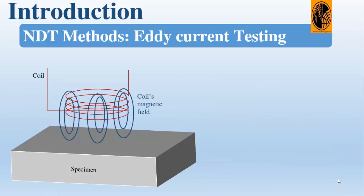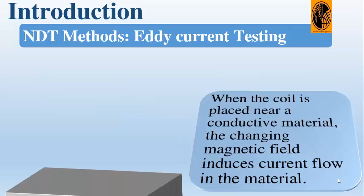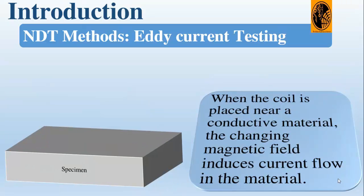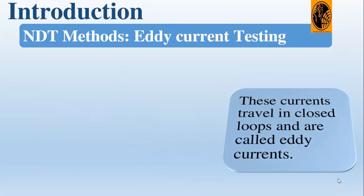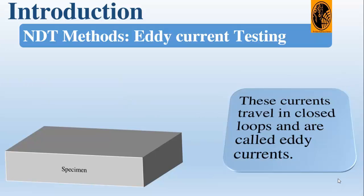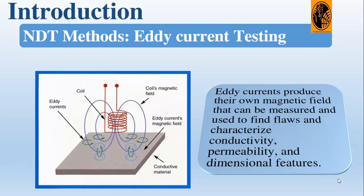Now let's see another technique: eddy current testing. An alternating electrical current is passed through a coil, producing a magnetic field as seen in the picture. When the coil is placed near a conductive material, the changing magnetic field induces current flow in the material. These currents travel in closed loops and are called eddy currents, represented here by the green arrows.